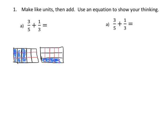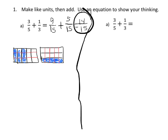So 3 fifths is now going to become 9 fifteenths, because we can just count. And then 1 third is going to be 5 fifteenths, because we can just count all the little blues. Then we can add together and get the answer of 14 fifteenths. That's using the area model, but we want to move to doing it numerically.